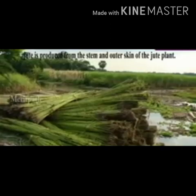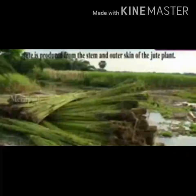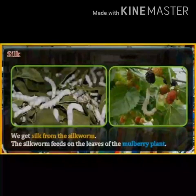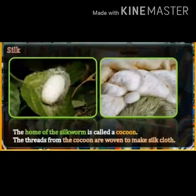Jute is obtained from the stem and outer skin of the jute plant. We can make jute bags from it. Wool is the thick hair that grows on the body of a sheep. From the sheep we can get the wool. Silk is obtained from the silkworm. The silkworm feeds on the leaves of the mulberry plant. The home of the silkworm is called a cocoon. The threads from the cocoon are woven to make silk cloth.